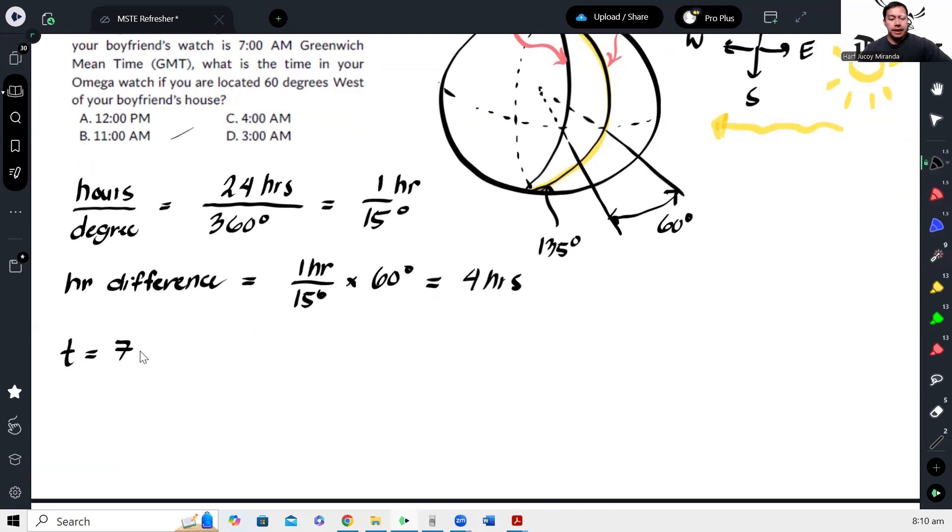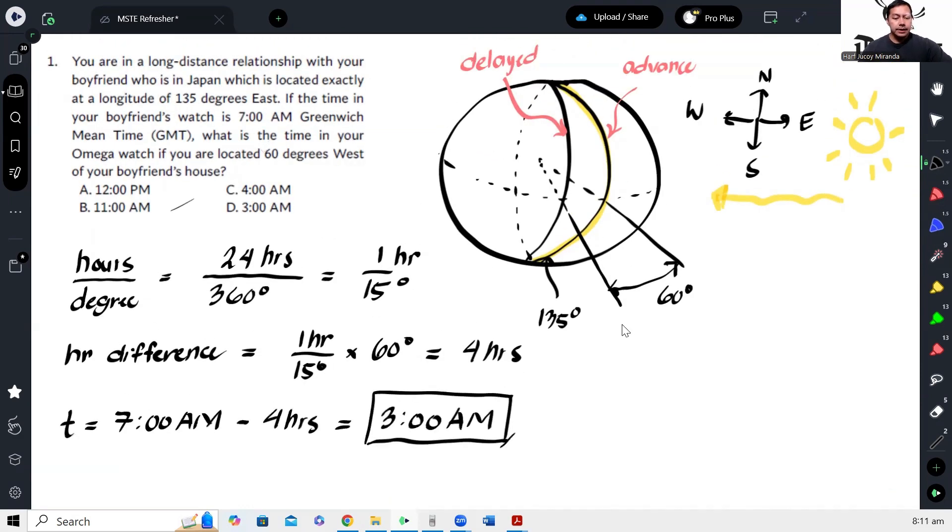7 AM minus 4 hours. Okay, and that gives us 3 AM. Okay, and that will be our answer.